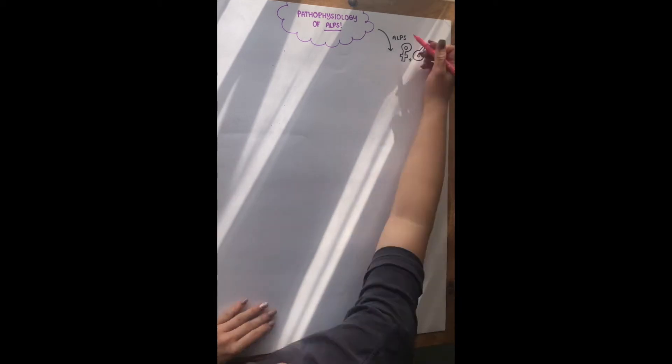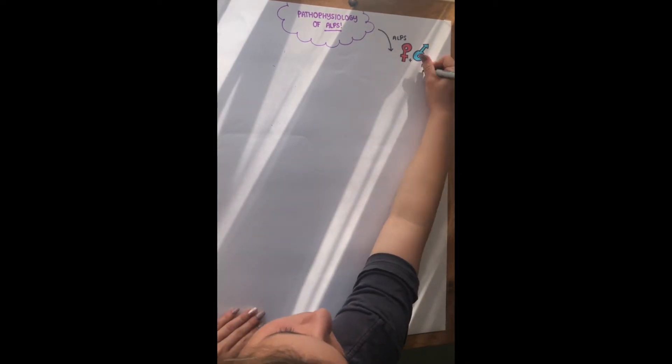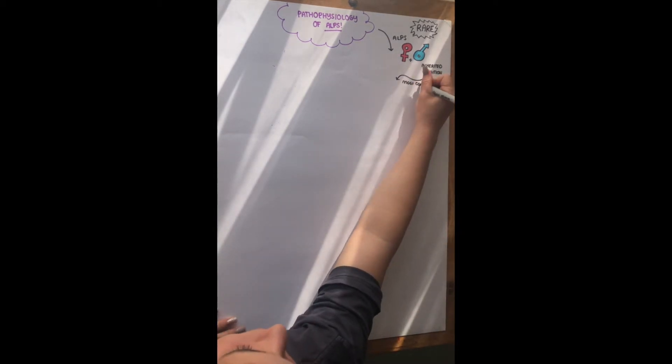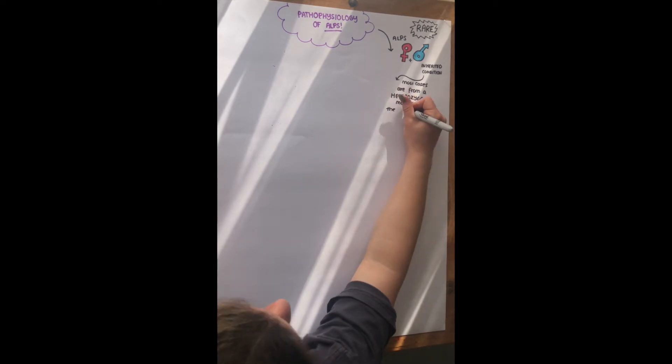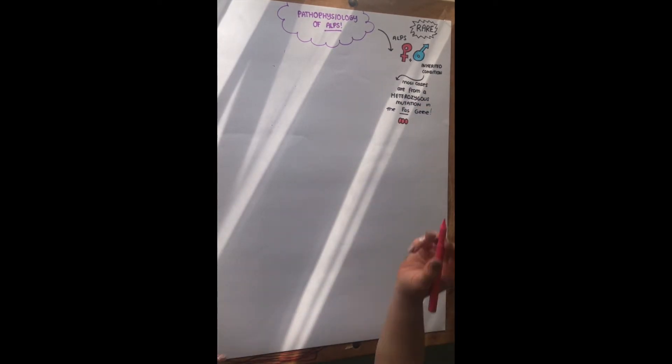So ALPS is an inherited condition, and it can be inherited to both genders. And it is quite rare, so it's definitely a rare disease. It's still important, though. Most rare diseases are still very important. And most cases are from a heterozygous mutation of the FAS gene. So I'm just going to quickly explain this. So a gene is part of our DNA, so the blueprints that help make up our body, or things in our body. And a mutation is when something changes, and it's usually not for the better.